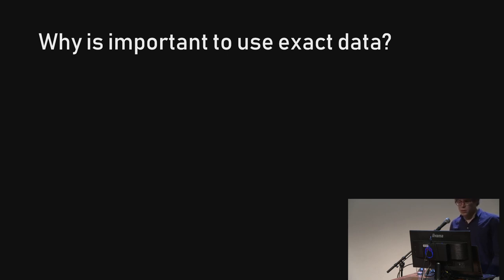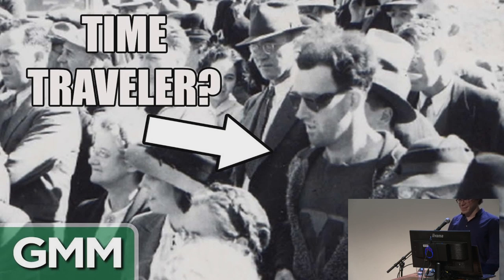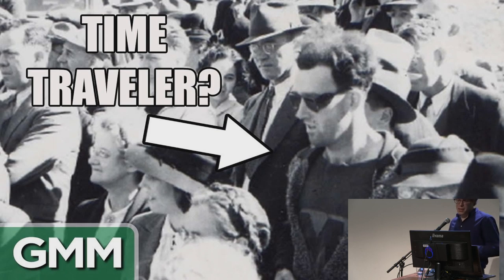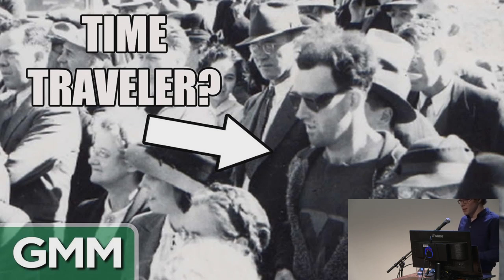Why is it important to use exact data as a 3D modeler? Because of 'time travellers.' If you're modeling something historical — say, medieval — you cannot take things from the 17th century and place them in the 11th century. For many people it looks the same, but it's like putting a guy from the 1980s into a 1930s scene, or placing a Lamborghini in the 1930s and calling it a historical reconstruction. Everyone would tell you Lamborghinis didn't exist in the 1930s.